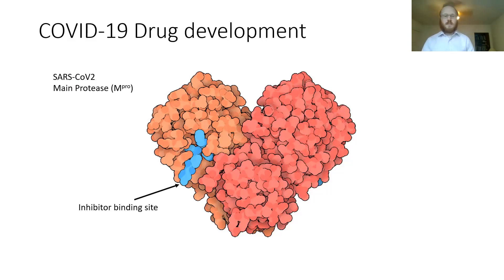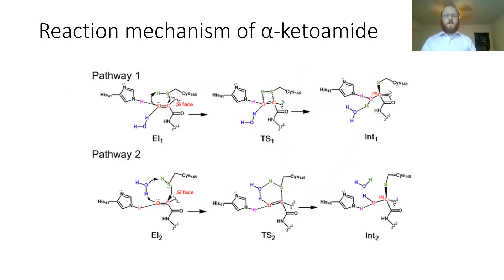In blue here there's this nice inhibitor binding site. One paper I looked at proposed various reaction mechanisms for alpha-ketoamides and tested them with these ONION-type models. Pathway one and pathway two are both very similar—there's the cysteine 145 and histidine 41, as well as the alpha-ketoamide and water. The only real difference is that in pathway one, water is not part of the catalysis, whereas in pathway two, it forms a tetrahedral intermediate to help catalyze the reaction.